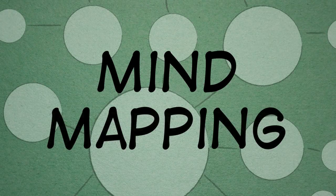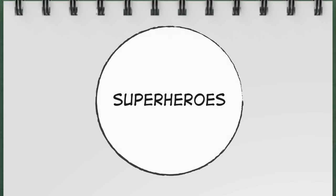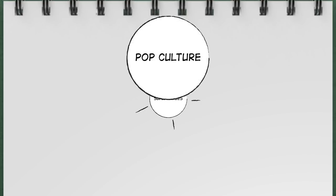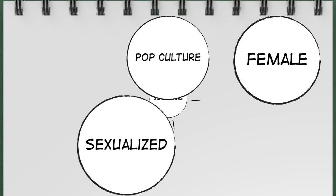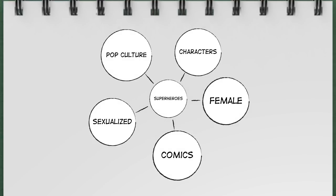The first technique is called mind mapping. This technique is very visual and requires a blank piece of paper and a pencil. Start with your big topic idea in the center — for our example, superheroes. Next, draw connections outwards. Some examples we saw online were: pop culture, female, sexualized, comics, characters, and many more.